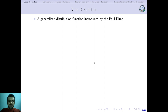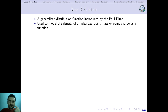The Dirac delta function is basically a generalized distribution function which was introduced by the quantum physicist Paul Dirac. He introduced it as a tool for modeling the density of an idealized point mass or a point charge. In mechanics or electromagnetism we have the concept of a point mass or a point charge — something that has mass or charge but does not have any size because it is concentrated at a point. The Dirac delta function was used to represent such objects mathematically.